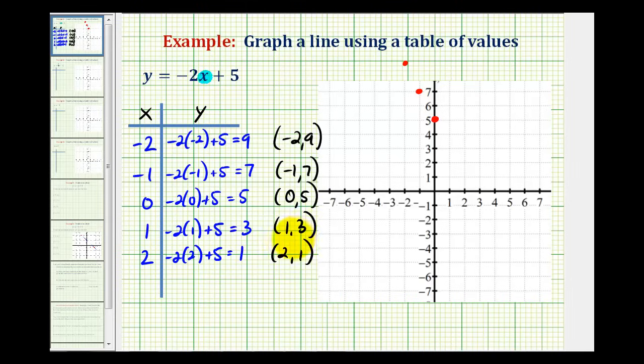For the point one, three, we'll move right one and up three. So right one unit, up three units here. And the last point is two, one. So we'll go right two units and up one unit.